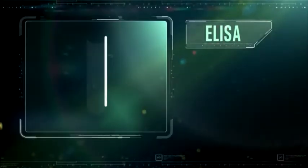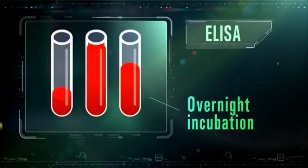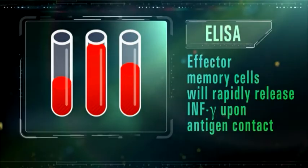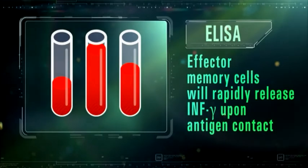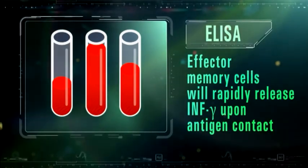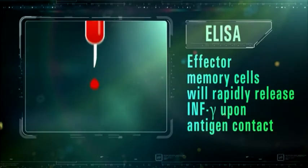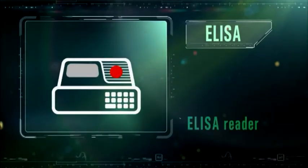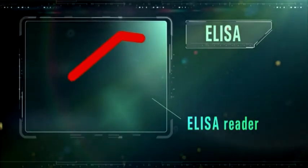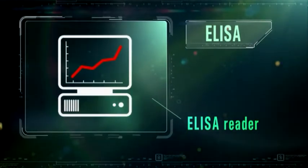System ELISA QuantiFERON-TB Gold In-Tube evaluates concentration of interferon gamma in blood plasma with enzyme-linked immunosorbent analysis after incubation of whole blood with recombinant protein CFP10, ESAT6.